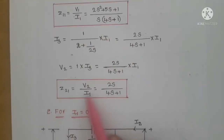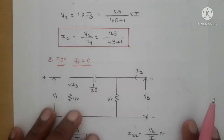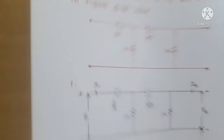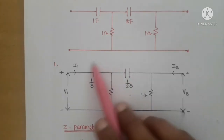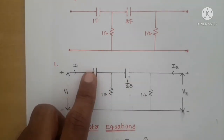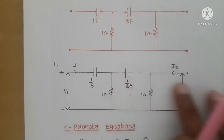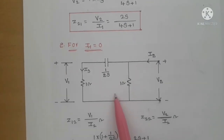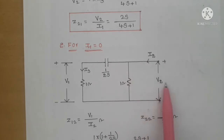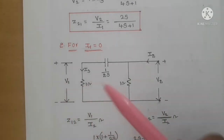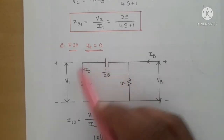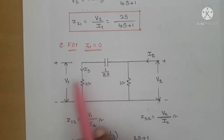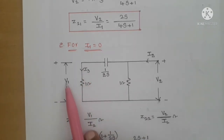Similarly, making i1 = 0 gives the remaining parameters Z12 and Z22. When i1 = 0, there is no current in the series capacitor so it is removed. The circuit now has 1 ohm, 1/(2s), and 1 ohm, with i2 applied at port 2 and v1 being the voltage across the 1 ohm resistor at port 1. We again introduce i3 as the current in that branch.